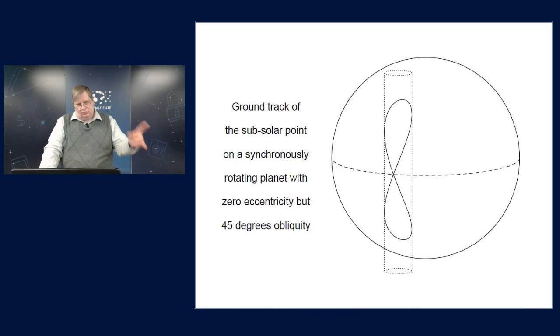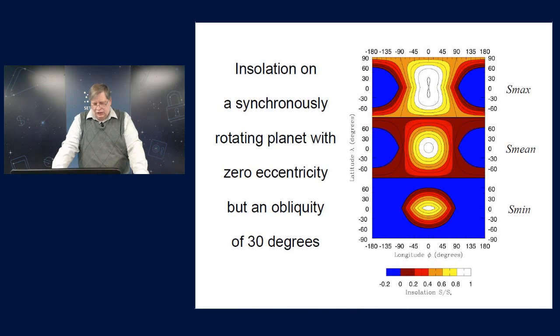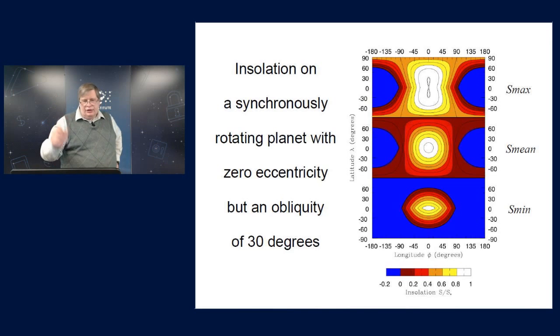So how does this motion of the sub-solar point affect the insolation over the surface of the planet? Well, here's a case for a synchronously rotating planet. Again, there's no eccentricity, but I've given this an obliquity of 30 degrees. So if you look at the maximum insolation in the top panel here, you can see that that 99.99% insolation contour is making a figure eight loop that's just tracking that analemma, the sub-solar ground track.